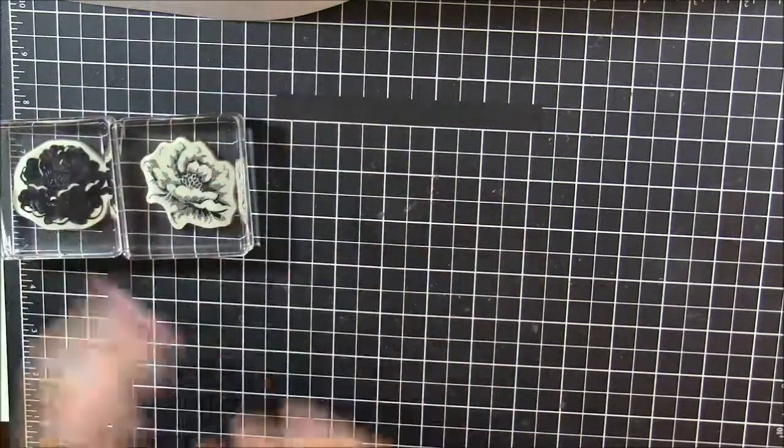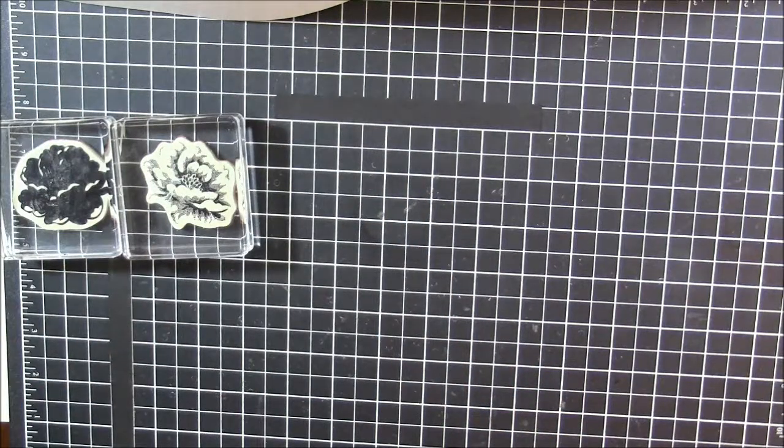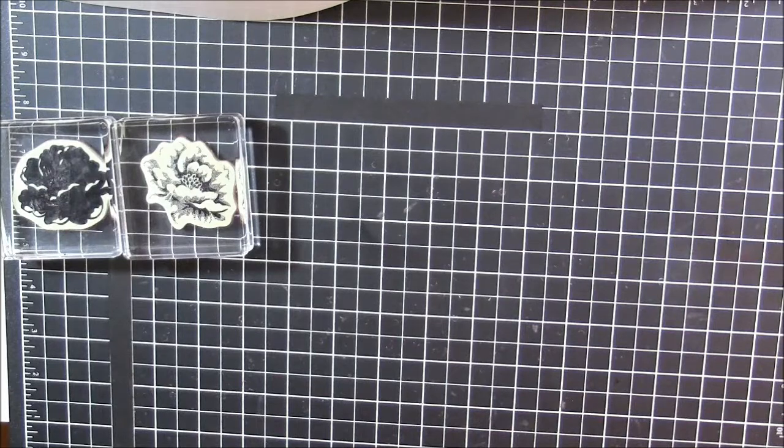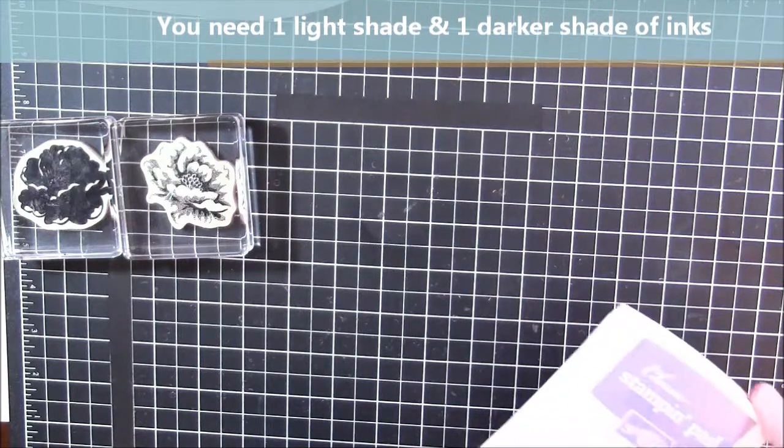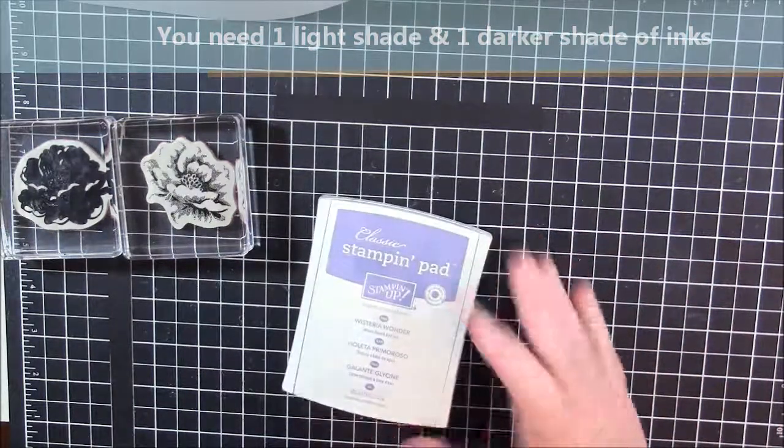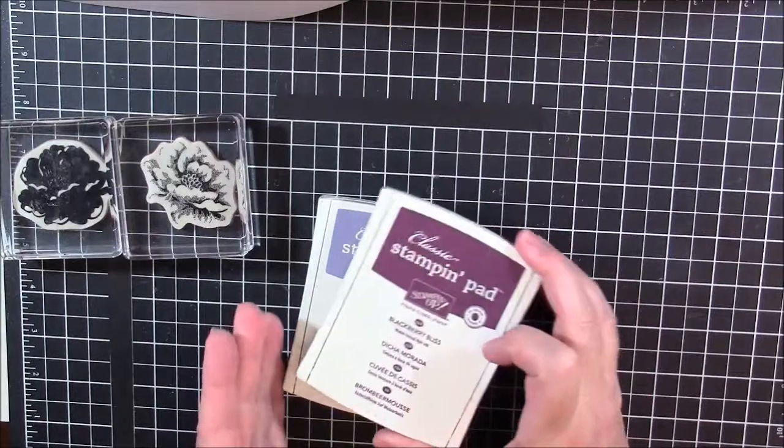You'll also need two shades of ink. You'll need a light shade and a dark shade for each image you're creating. Now you're going to use the light shade for the more solid image and the darker shade for the detail.